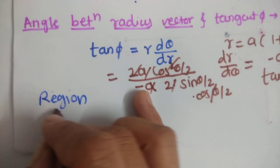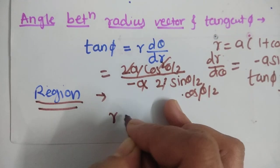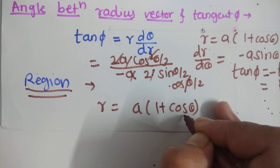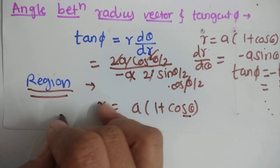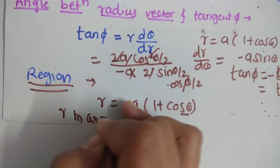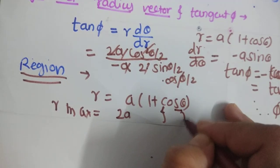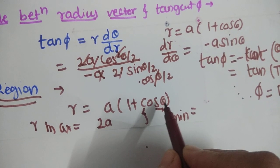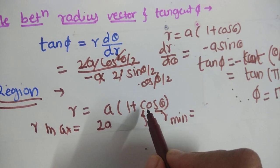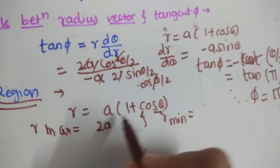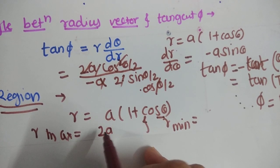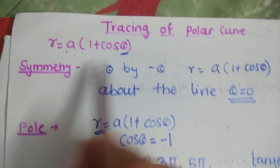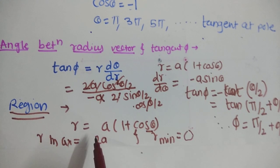For the region of presence and absence: we have r = a(1 + cos θ). The maximum value of cos θ is 1, so r_max = 2a. The minimum value of r is 0 (when cos θ = −1). Therefore, the curve r = a(1 + cos θ) lies within a circle of radius 2a.